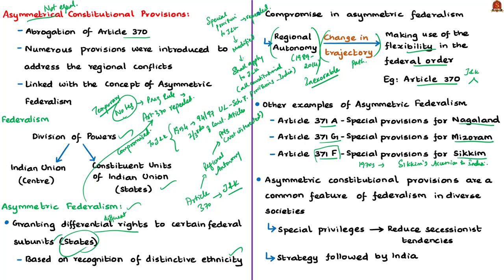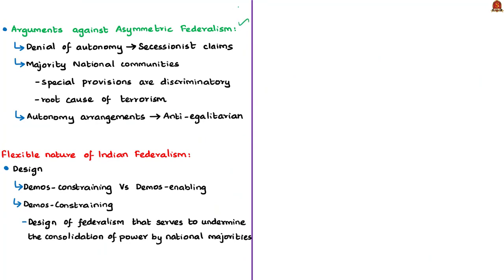The author states that asymmetric constitutional provisions are a common feature of federalism in diverse societies. Special privileges like autonomy are given to states with different ethnicities so that the people will not fight for secession — to withdraw from India and form a new country. However, arguments against asymmetric federalism exist. One argument from minorities is that the autonomy given is not properly exercised, so secessionist claims increase because autonomy is denied. The argument from the majority national communities is that these special provisions are discriminatory — for example, only specific people can own property in a region, denying others the right to own property.